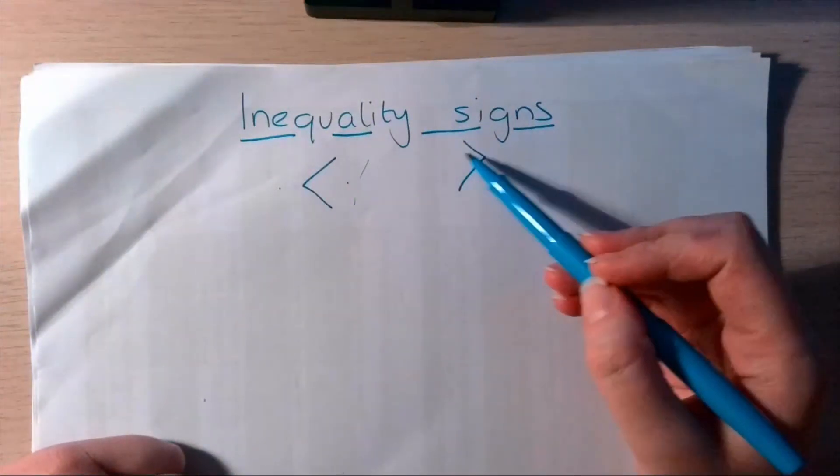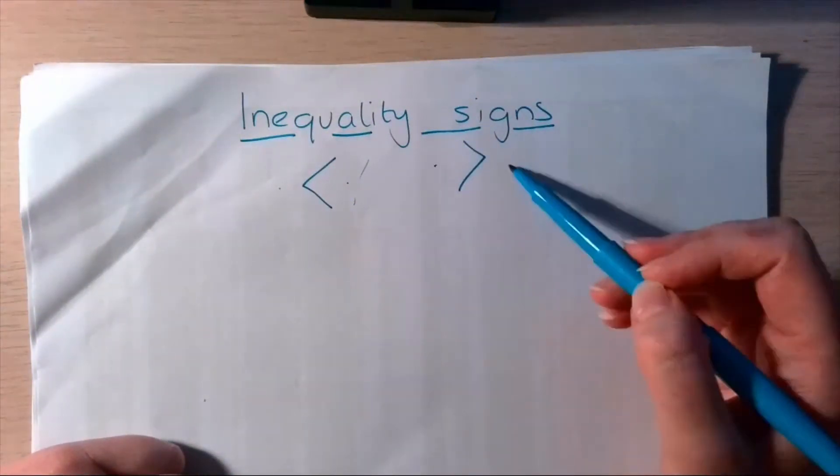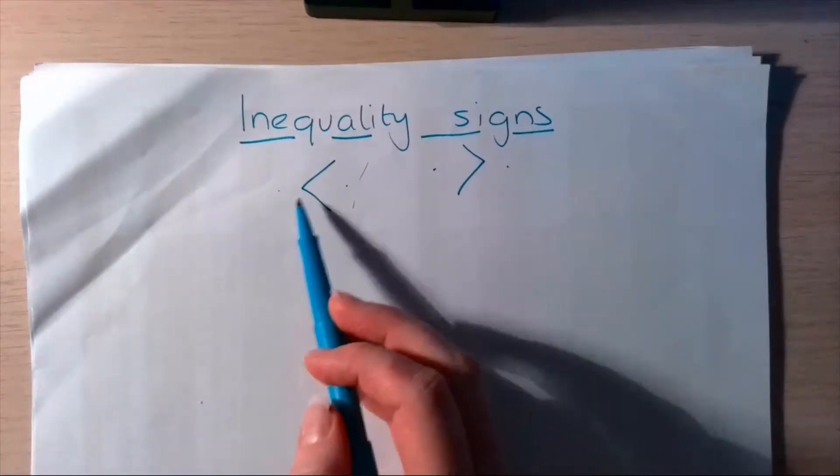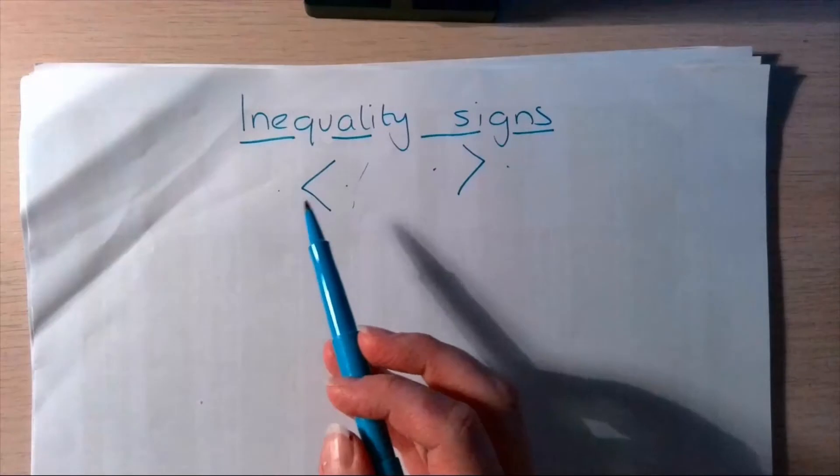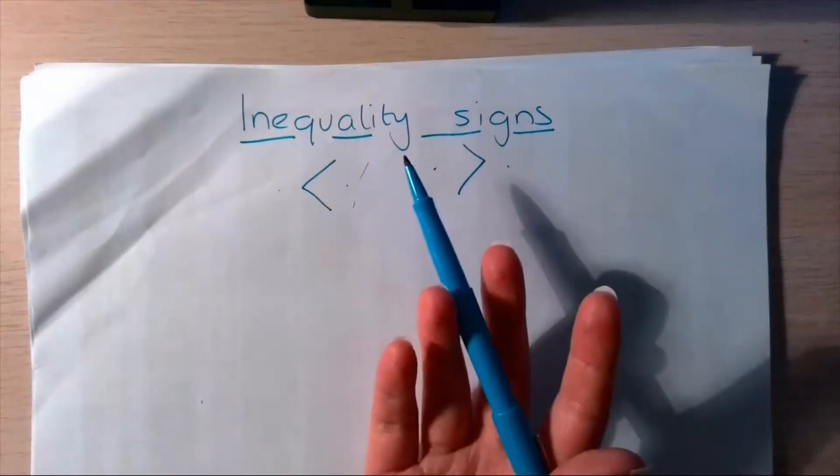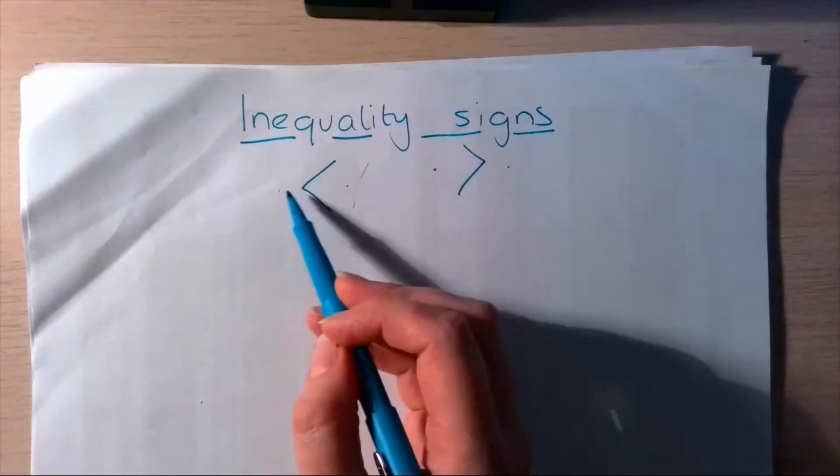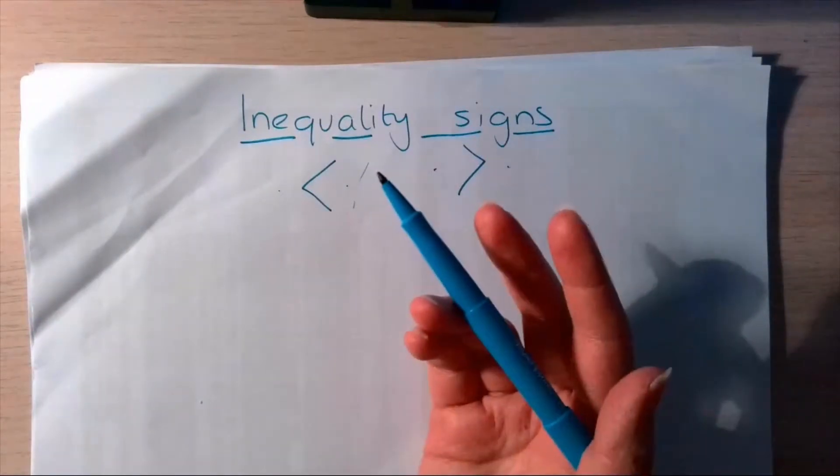So, the same thing here. The bigger number is on this side in this case, and the smaller number is on this side. So, I know we tend to say it means less than or it means greater than. Actually, the sign, there's only one sign, it's just been flipped over. And as long as you remember that this side is the smaller side, the smaller number's on this side, you're fine.